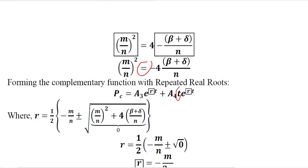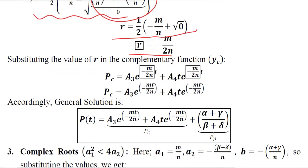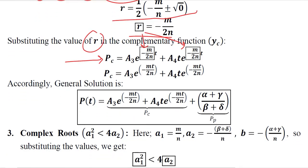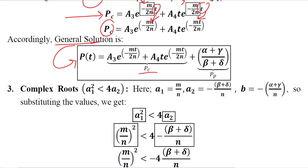This is the formula in which an additional t appears in the repeated real root case. The roots will be equal to this term since the discriminant part equals 0. When we put the value in the complementary function standard form, instead of r we write this term — and again instead of r we write the same, because there is a common root. Both R1 and R2 are the same, so we multiply by t inside and write it accordingly. This PC can be added with the particular integral to give the general solution, where this is PC and this is PP.